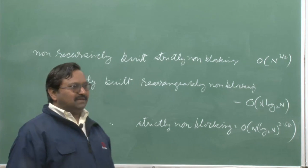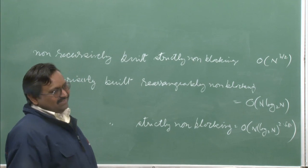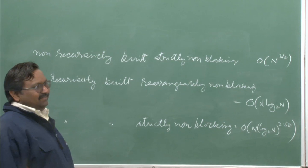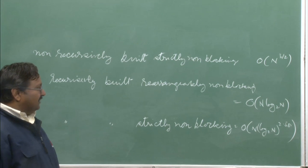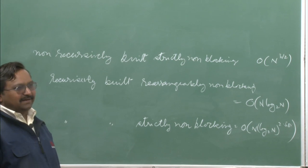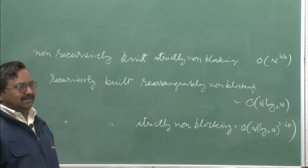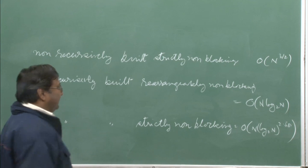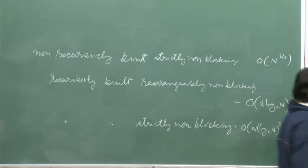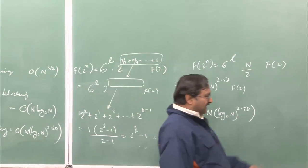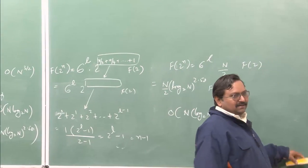Because I just made an estimate — whatever I am going to compute, cross-point complexity cannot be worse than this. I can still find something better. It gives us a bound. Can I build something which is strictly non-blocking and has better complexity? That is the next question, and it was answered by Cantor (C-A-N-T-O-R), who came up with the Cantor network.